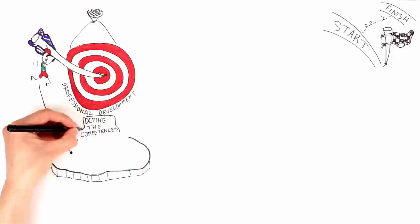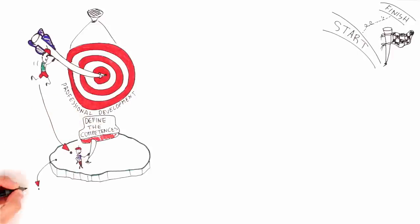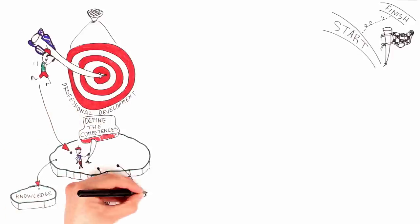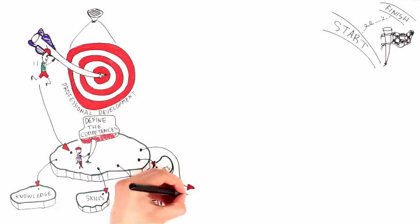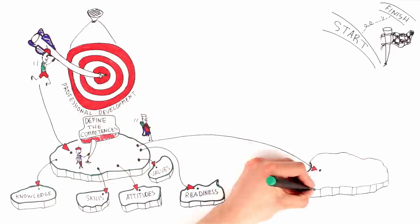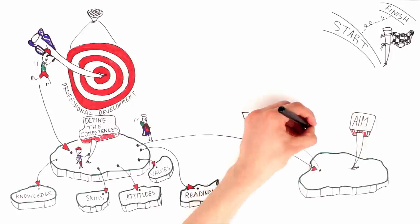Try to break down the competences into smaller components: knowledge, skills, attitudes, values, readiness to act. This will help you define the educational objectives and major content elements of the activity.